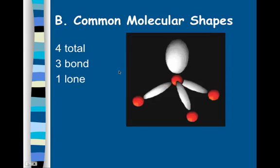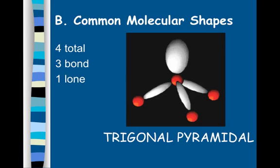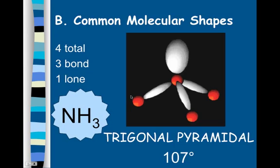Another common molecular shape is trigonal pyramidal — three bonds in a pyramid shape. We have four pairs of electrons total, three of which are bonding and one lone pair. Remember, lone pairs push more than bonding pairs, so it's like a bigger Mickey Mouse ear pushing on the bonds. The bond angles are 107 degrees, and the classic example is ammonia, NH₃.